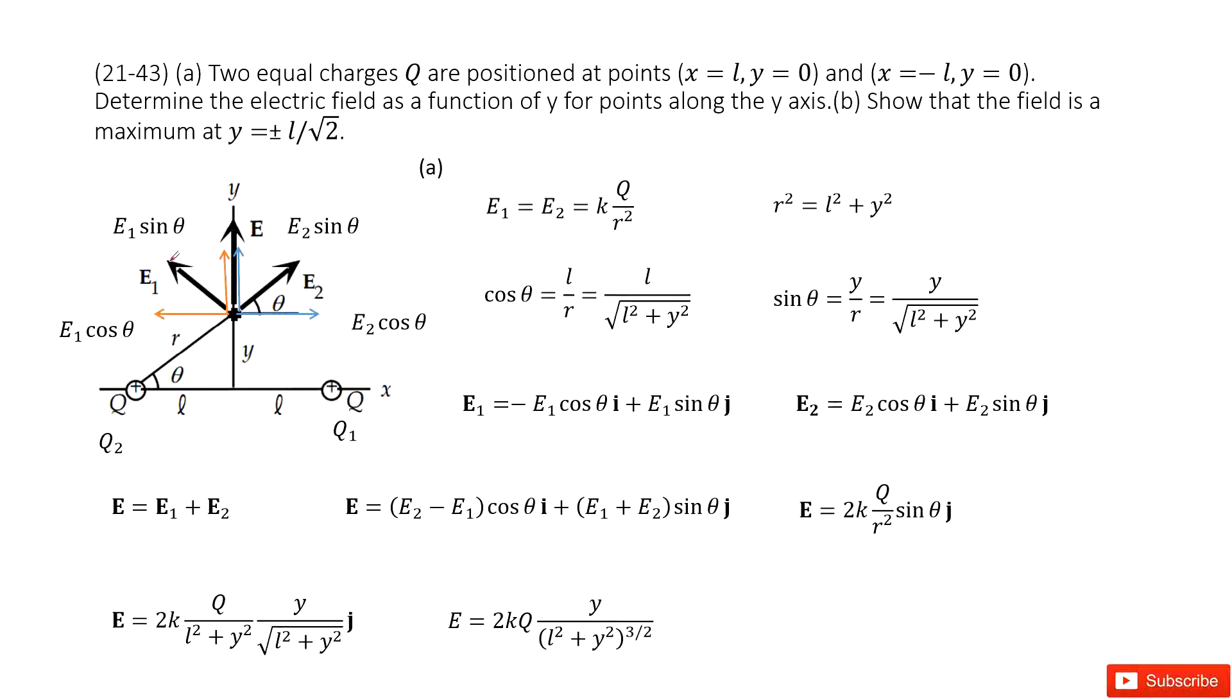Chapter 21 is about electric charge and electric field. In this system, we have two equal charges q1 and q2, both positive, with charge q. At position x equals L, y equals 0, and at x equals negative L, y equals 0. So we can consider these two charges in mirror symmetry.